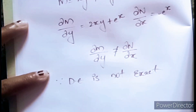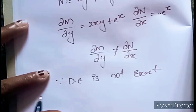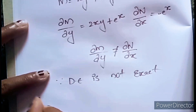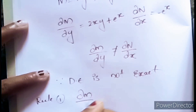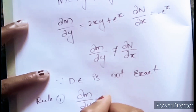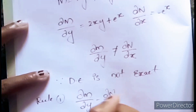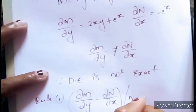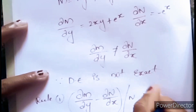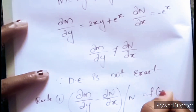So now we have to find the integrating factor. In order to find the integrating factor, Rule 1 is: (∂M/∂y − ∂N/∂x) divided by N should be equal to f(x).